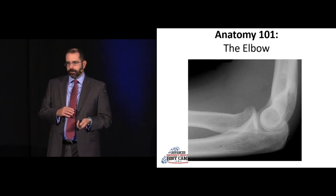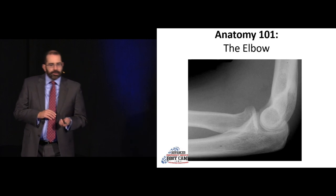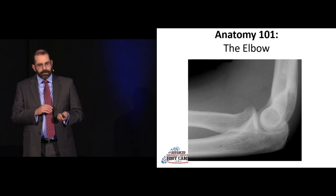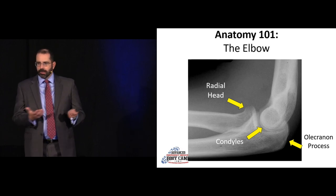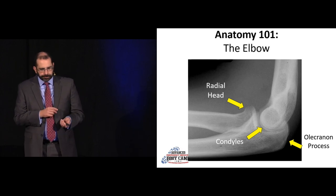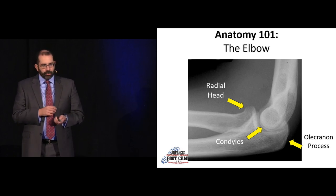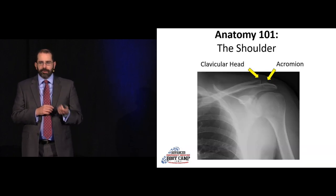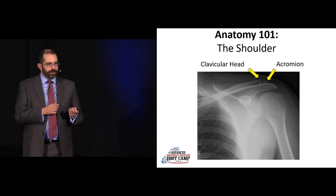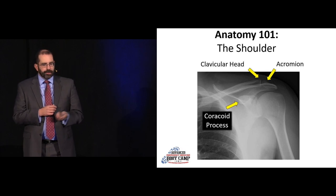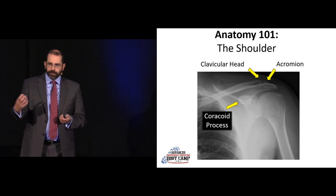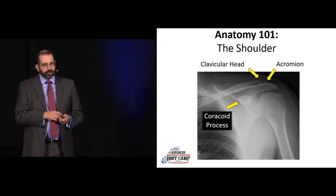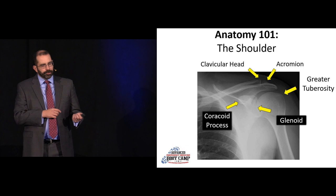Moving up into the elbow: there's your radial head, your olecranon, your articulating condyles, and they should form that nice figure-of-eight or hourglass appearance. Moving up into the shoulder: you have your clavicular head and your acromion — together they form the AC joint. There's your coracoid process, the crow's beak coming out at us, your greater tuberosity, and your glenoid.